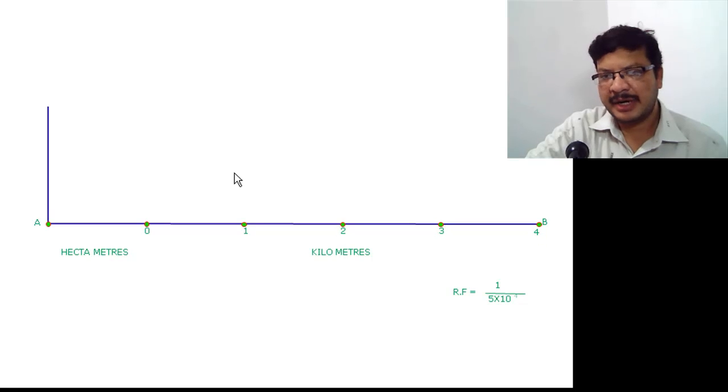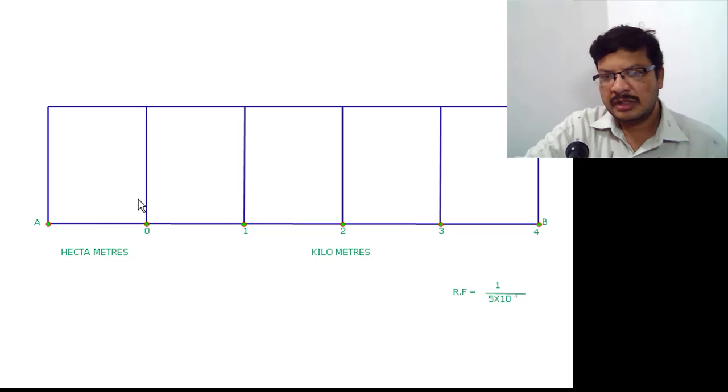Then take 50 mm height. Construct the rectangle. Draw the vertical lines. Now this length is 1 km. To get hectometers divide this into 10 equal parts. Because 10 hectometers equal to 1 km.